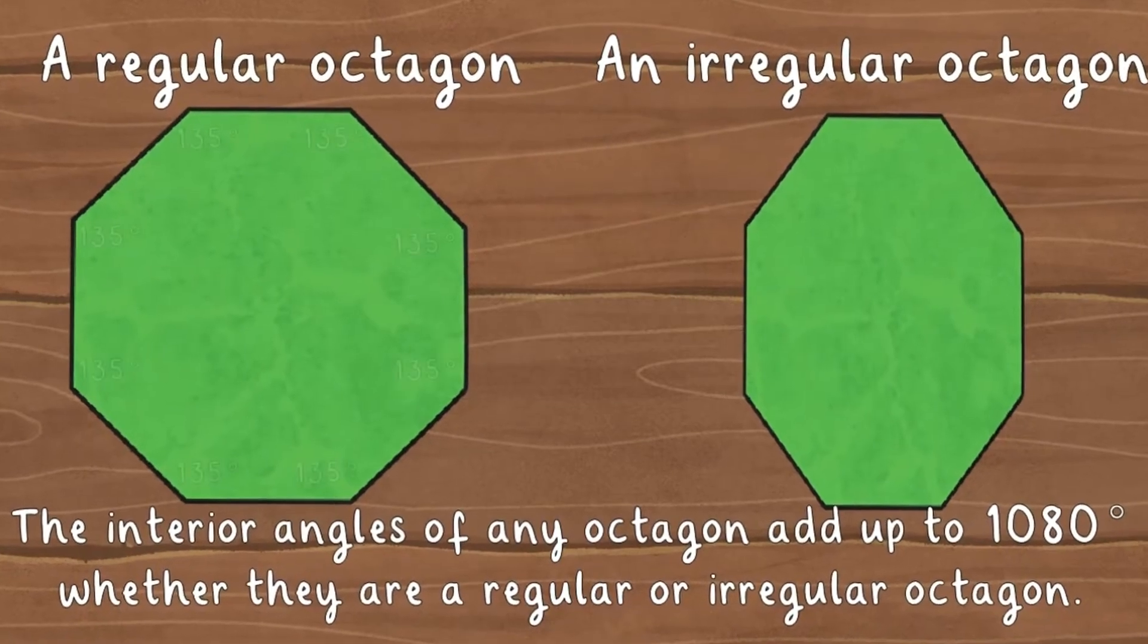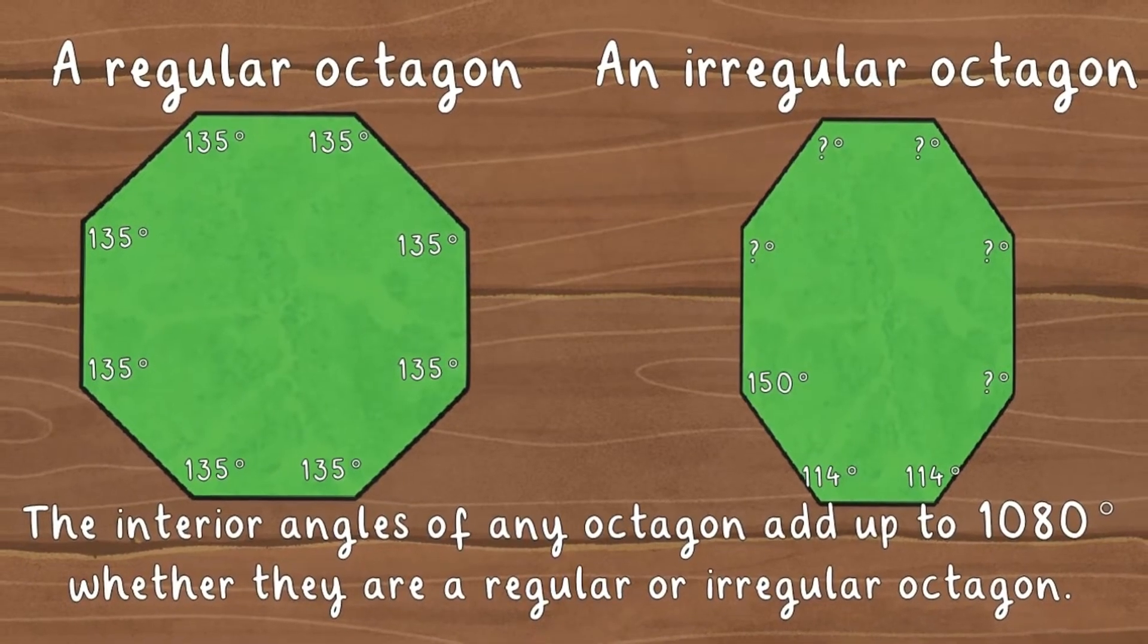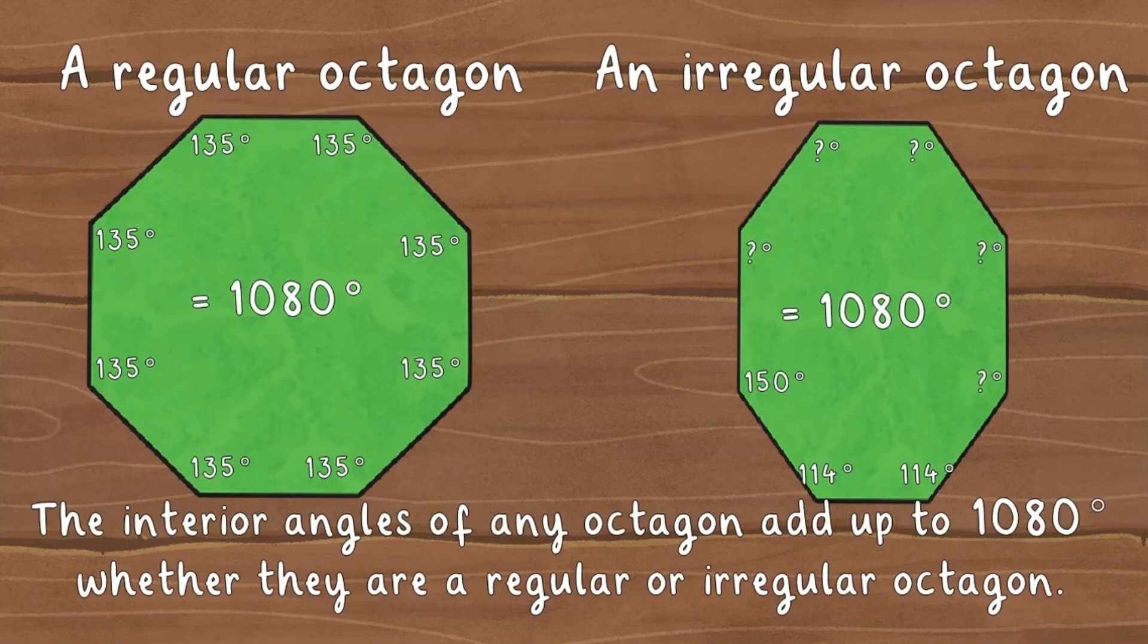Regular octagons have interior angles of 135 degrees. However, irregular octagon interior angles will vary depending on how it has been drawn. However, they will all add up to 1080 degrees.